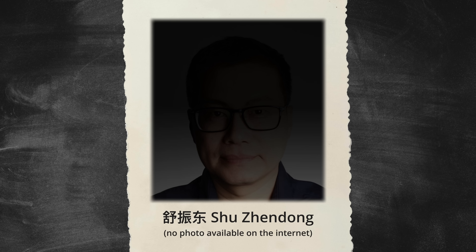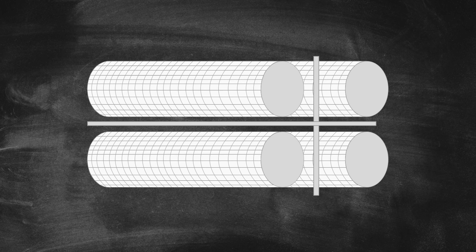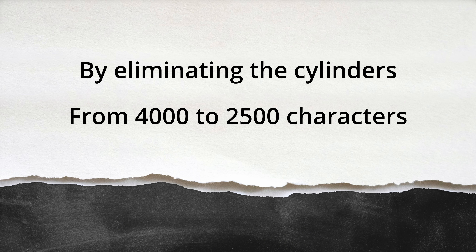Luckily for the future of the Chinese typewriter, there was no lack of Chinese talent eager to tackle the problem Zhou Houkun left behind. A Shanghai native by the name of Shu Jindong entered the company and picked up where Zhou left off. He made quite a few changes to the original design. Shu Jindong decided to eliminate the cylinders completely — a major reason Zhou had to leave, since nobody could produce the cylinders the way he wanted. By eliminating the cylinders, the number of characters outputted decreased, but Shu Jindong edited the design to make all the characters in the visible typebed movable.